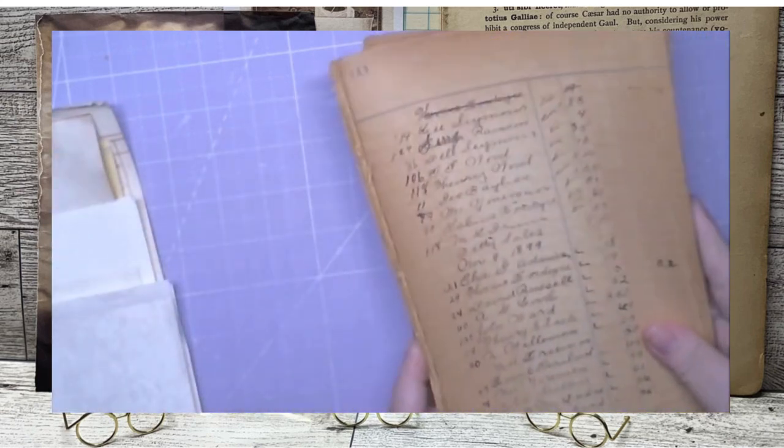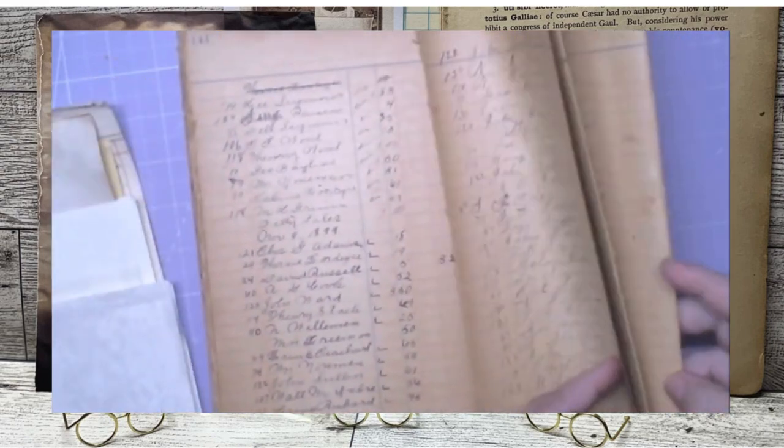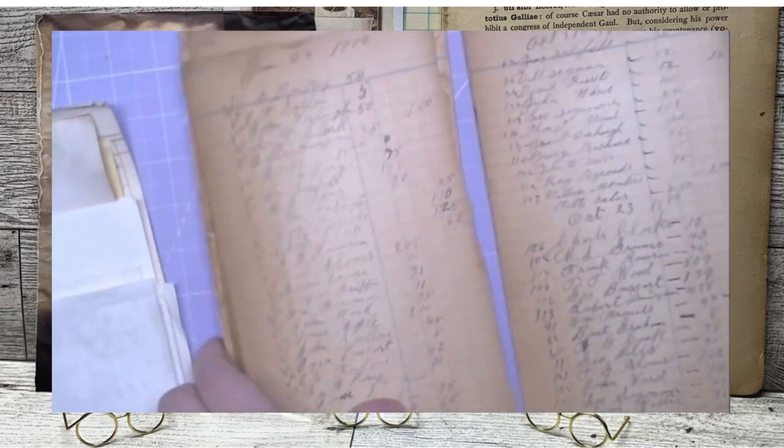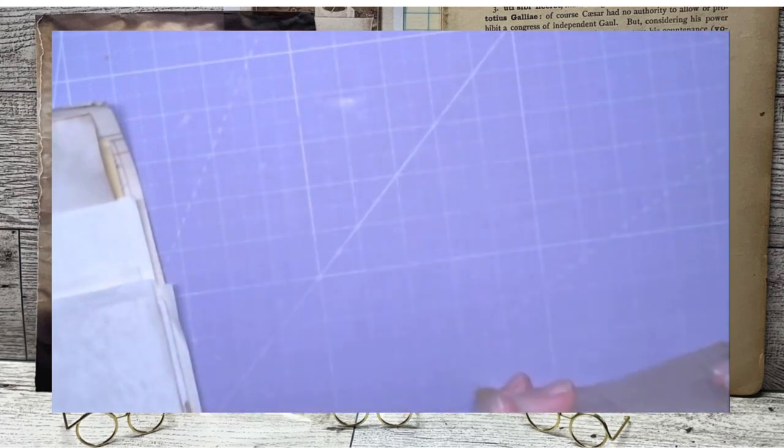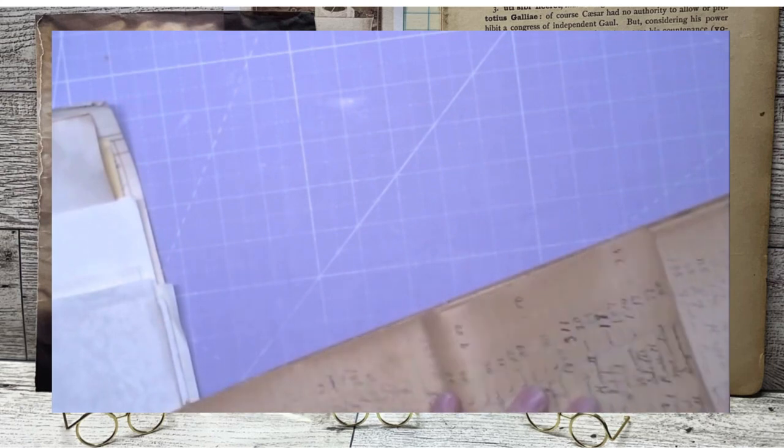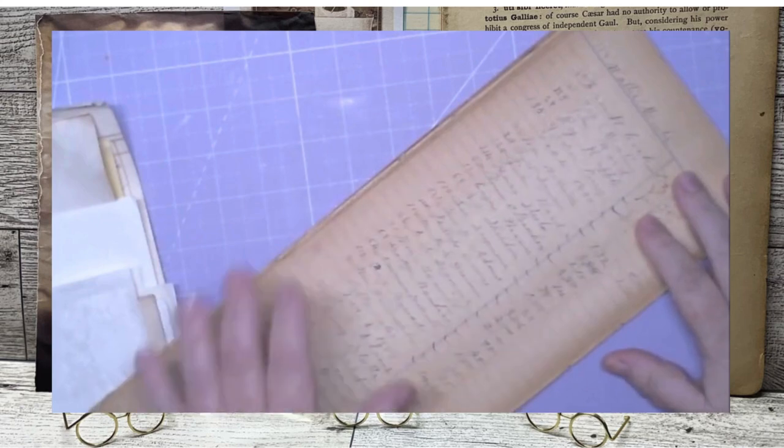We have this. These are ledger pages. And I like them because they make good journals, good journal pages. You fold them over, you can make a big pocket.